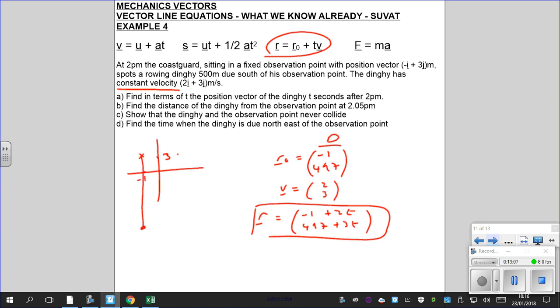Part B, the distance of the dinghy from the observation point at 2.05 p.m. So we're talking metres per second, constant velocity metres per second. So notice that unit, and this is 5 minutes. So 5 times 60, 300. T must be 300 in this case. So for part B, where is it? After 300 seconds, so you need to plug in 300 for t. So -1 + 2(300), -497 + 3(300). So this will tell you the position of where that dinghy is. So that's got to be 599, and -497 + 3(300) must be -1397.